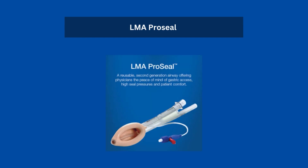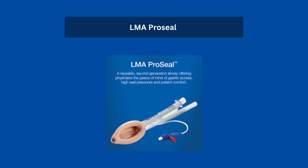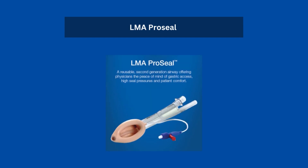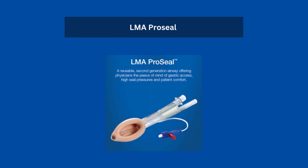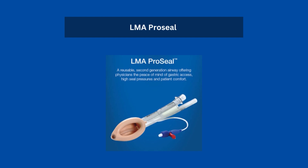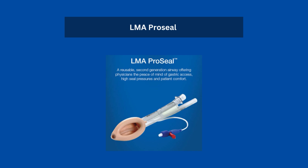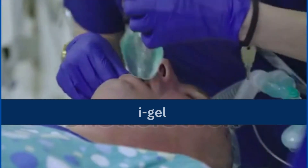Unlike the LMA Classic, in the LMA ProSeal there is a gastric drain tube that opens at the tip. This is designed to channel fluid away. It also reduces the chances of ventilation of the stomach during prolonged ventilation.